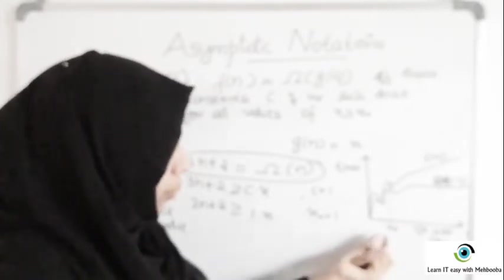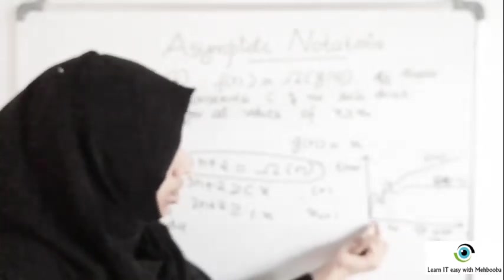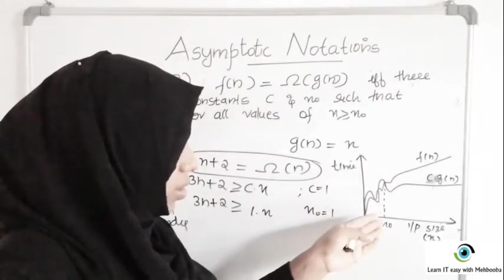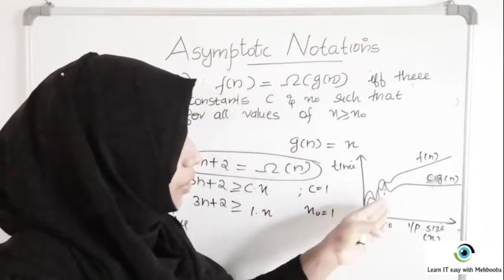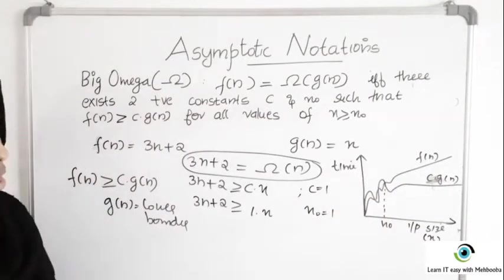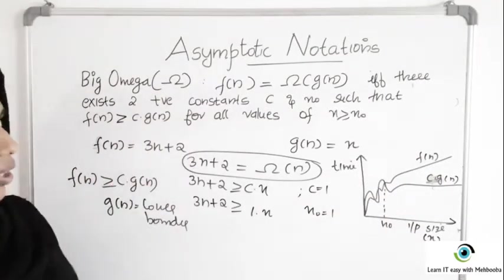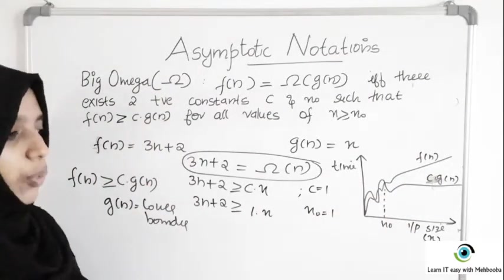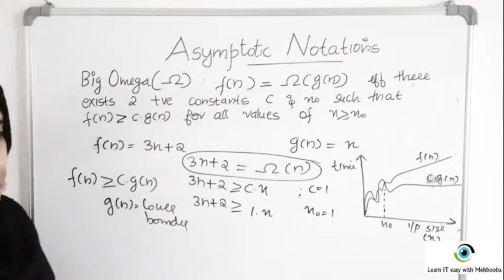Before this input size — that is when the input size is less than N0 — this inequality doesn't hold. But after N0 this inequality always holds. So asymptotic notations are applicable when the input size is large.